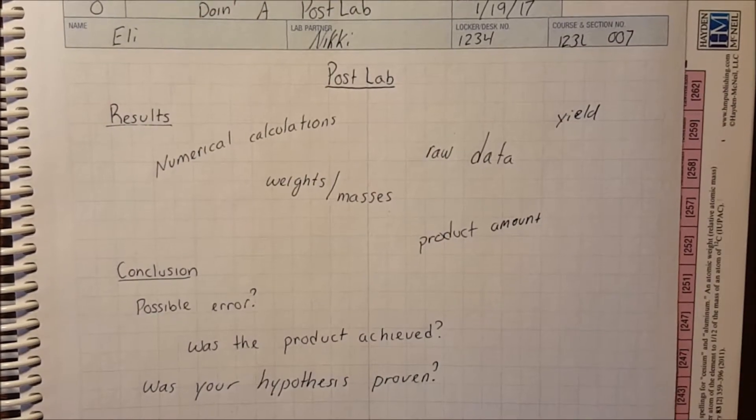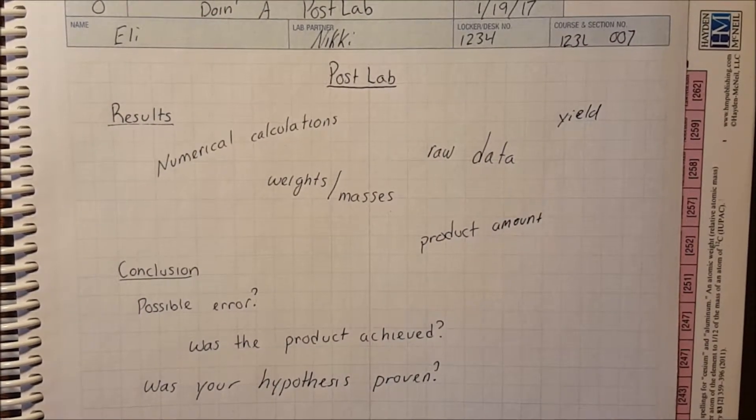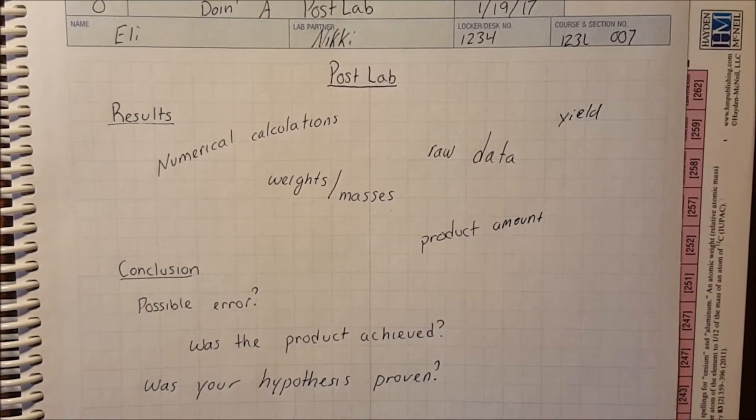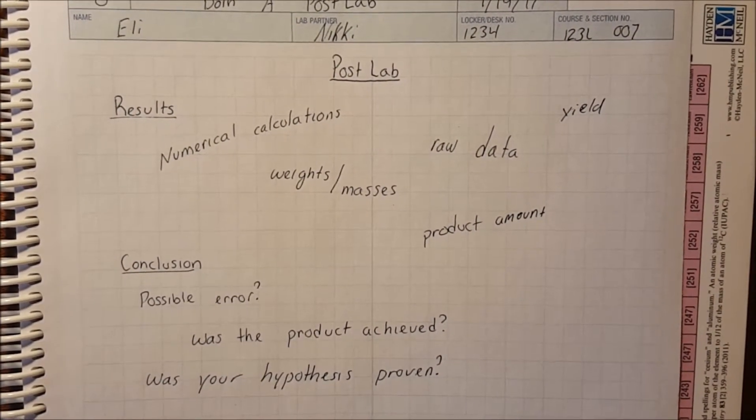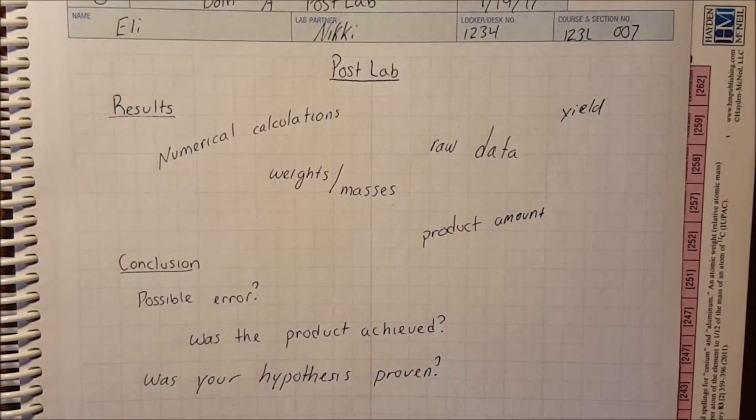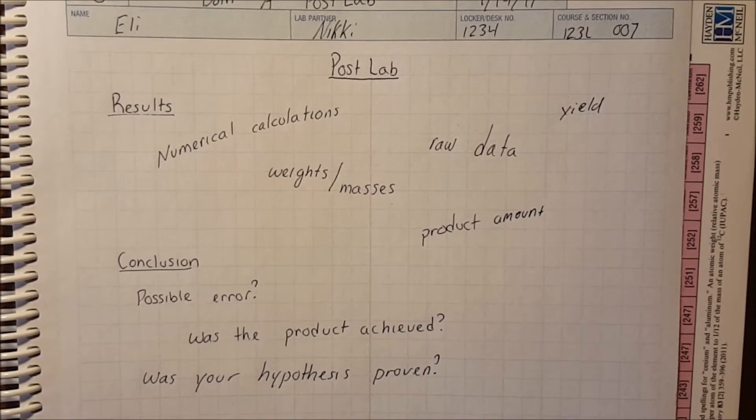After you have completed your lab, you will write a post lab which has three main parts. First, the results section is where you will do any calculations relevant to your experiment and show important figures and numbers.